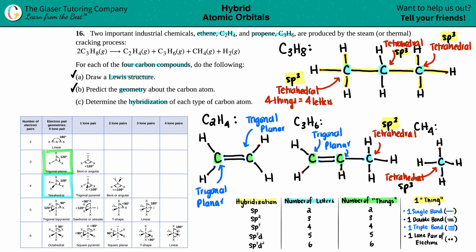For trigonal planar carbons: they have two single bonds plus one double bond. Even though the double bond has two lines, it counts as one thing — giving three things total, three letters, so they're SP² hybridized. This applies to all trigonal planar carbons: both in C₂H₄, and the two trigonal planar carbons in C₃H₆ — all SP² hybridized. Problem complete.